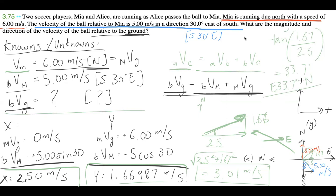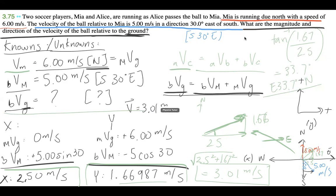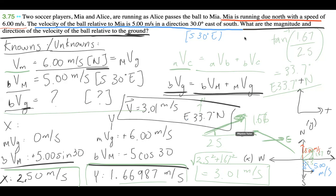Our final answer: the magnitude and direction of the ball's velocity relative to the ground is 3.01 m/s, east 33.7 degrees north. If this was helpful, please like and subscribe — that's how I know what content you enjoy. Leave any questions in the comments or send me an email. Thanks for watching, see you next time!